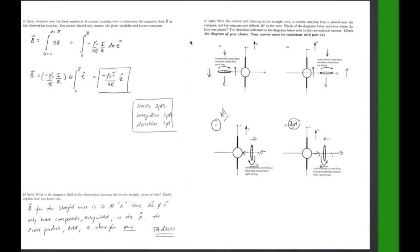Based on the flow of the current and knowing how the current flows back in C, you are able to pick C as your answer. And the conventional current flows clockwise viewed from right of the ring.